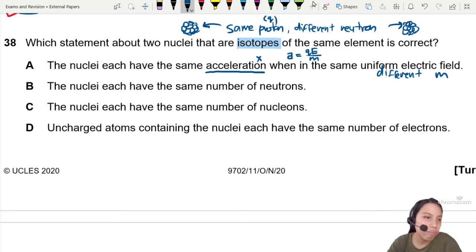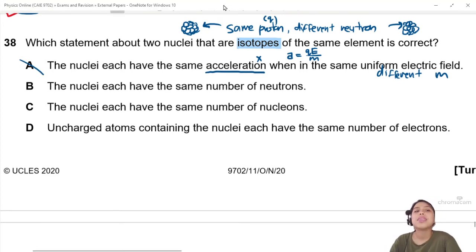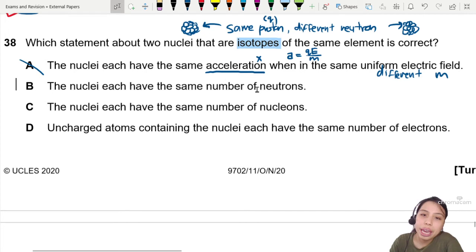Okay, so A, don't think it's a good choice. You want the correct answer. So, the nuclei each have the same number of neutrons.